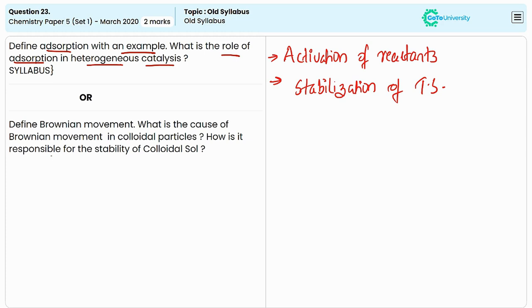After the reaction occurs, the products need to be desorbed from the catalyst surface to free up the active sites for new reactant molecules. Efficient desorption is essential for maintaining the activity of the catalyst.